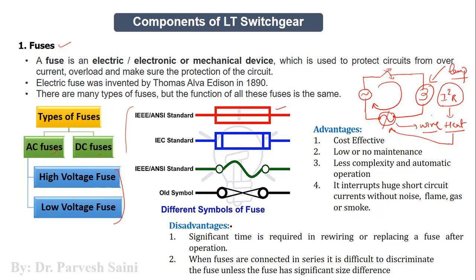Fuses have certain disadvantages. When the wire melts down, you have to rewire the fuse, which takes some time. Either you rewire the fuse or replace it entirely, because once the wire is melted down the fuse is of no use. You need to replace it with a new fuse or rewire it if it is a rewireable fuse.